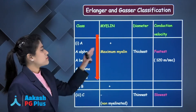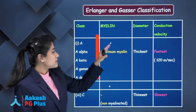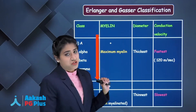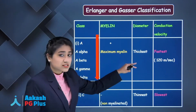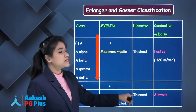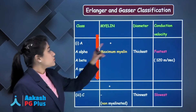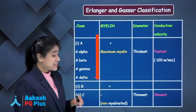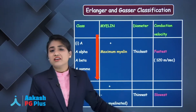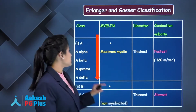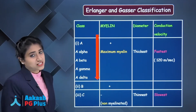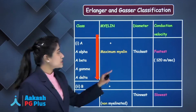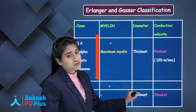A fibers are maximally myelinated compared to B, while C fibers are non-myelinated. A fibers are thickest in diameter while C fibers are the thinnest. For conduction velocity, A fibers are fastest and C fibers are slowest. So: A > B > C for conduction, myelination, and diameter.